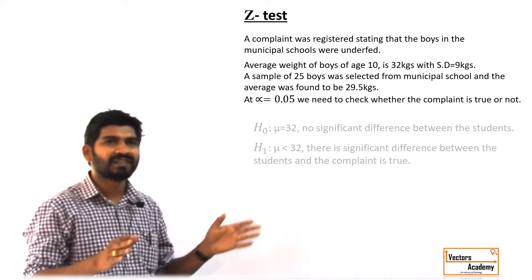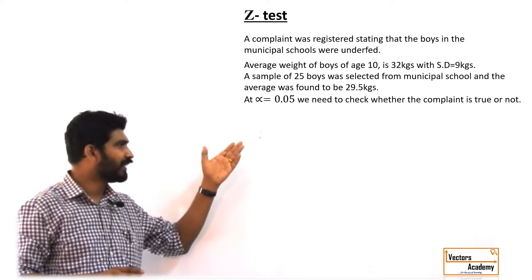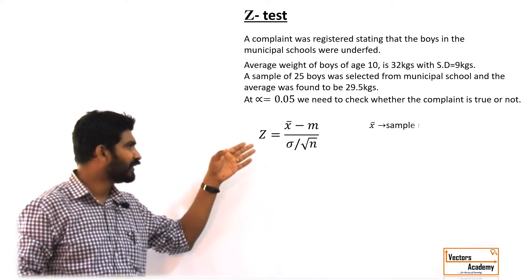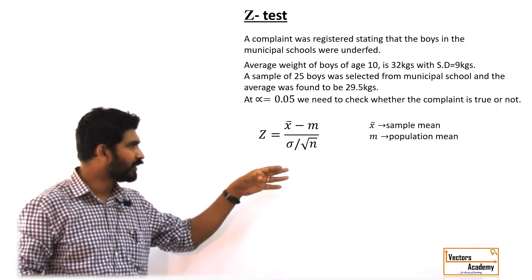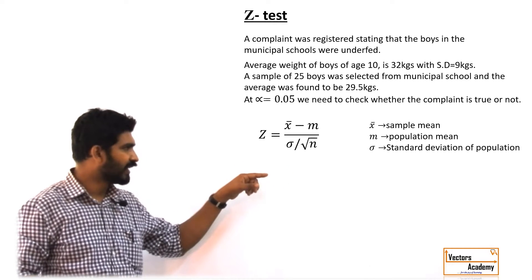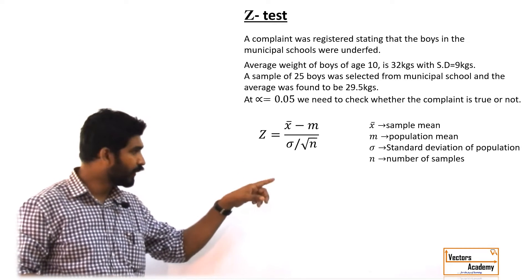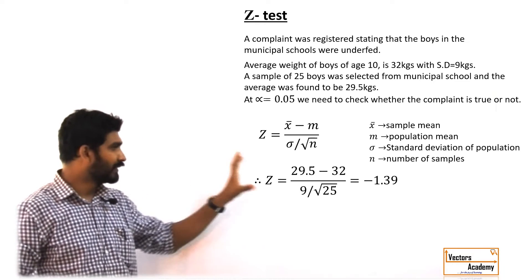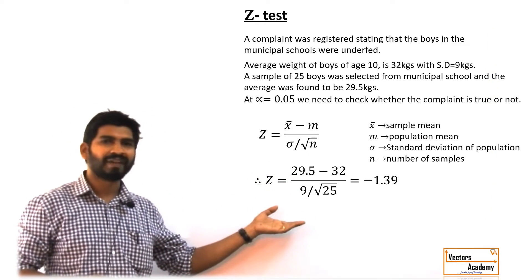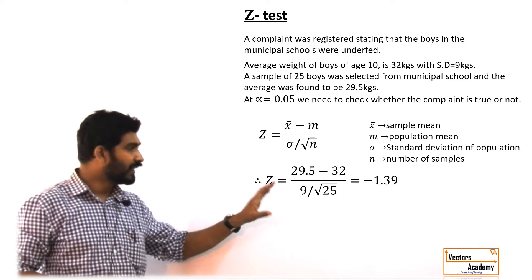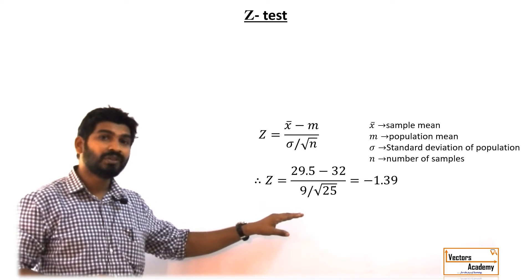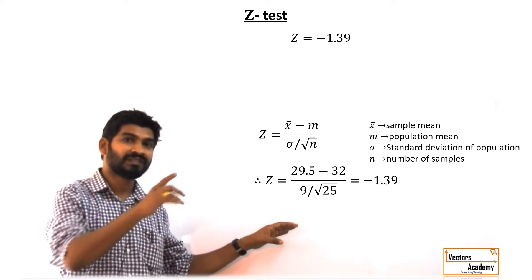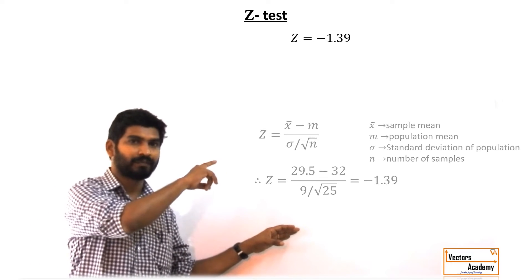There is a simple formula for calculating the Z value. Z is given by the sample mean minus the population mean, divided by the standard deviation upon the square root of the number of samples. By this calculation we get the Z value. Once you get the Z value, it can be used to find out the p-value of the selected samples.